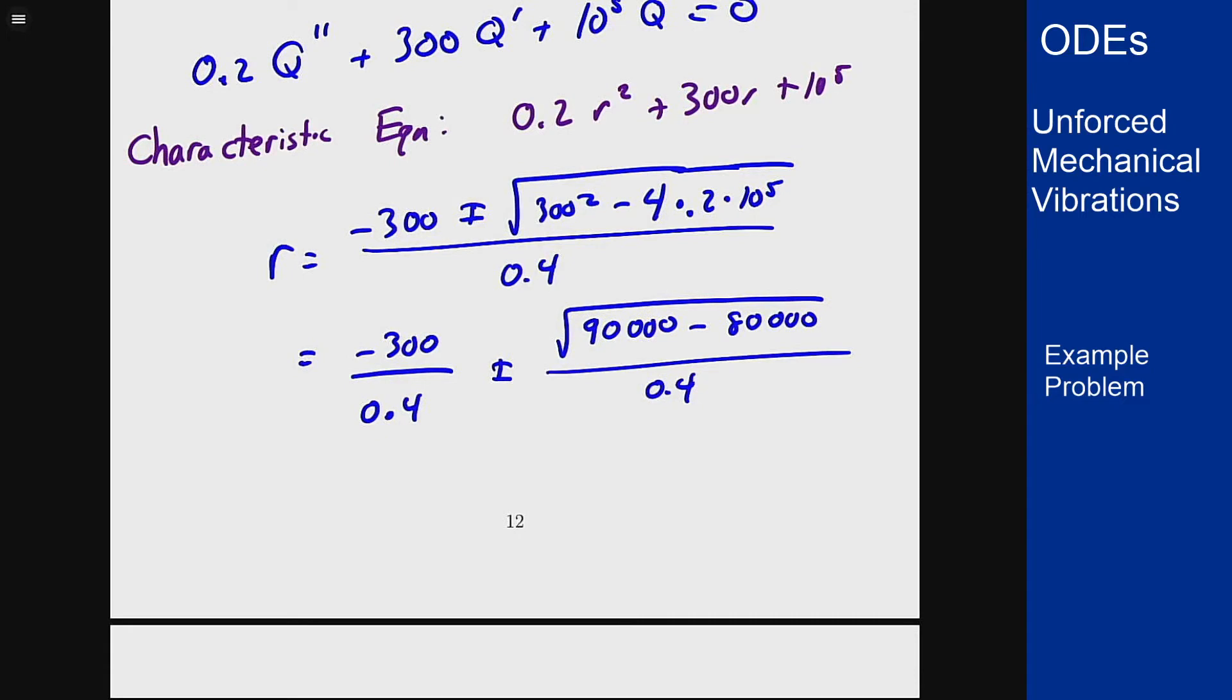0.4 is 2 fifths. This will be negative 5 halves times 300 plus or minus 5 halves times the square root of 10,000 which is 100. So I will get negative 750 plus or minus 250. So I get two roots at r equals negative 500 and r equals negative 1,000.